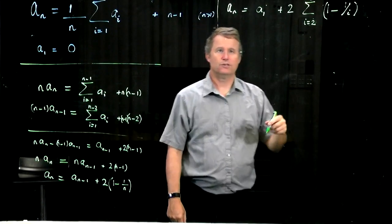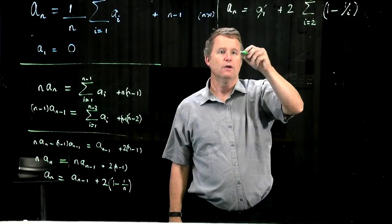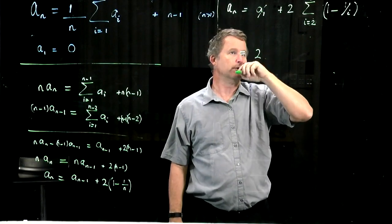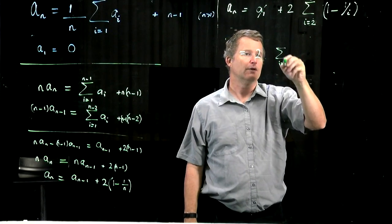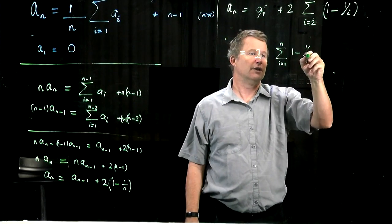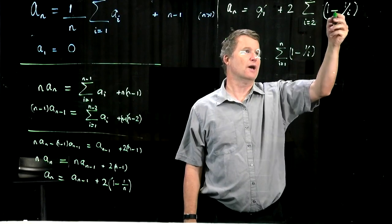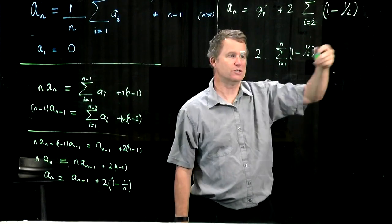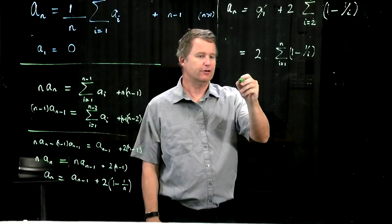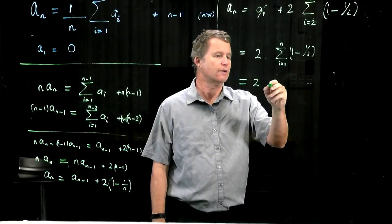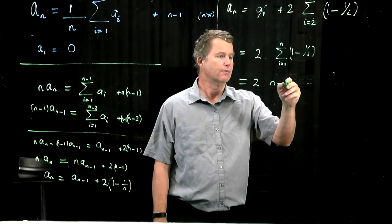Now a_1 is equal to 0, so that's going to go away. We're going to get a common factor of 2. Notice that we can add in the extra missing term when i equals 1, because there we get a 1 minus 1, which is 0. Might as well just add that in to simplify things. And now we get a very simple expression. It's just 2 times n minus h_n.